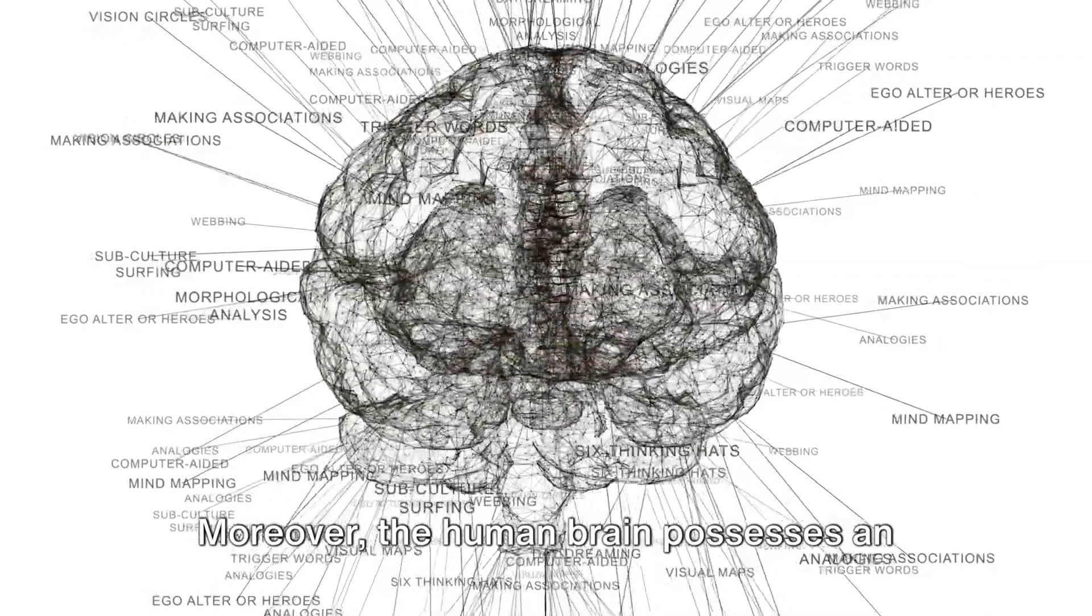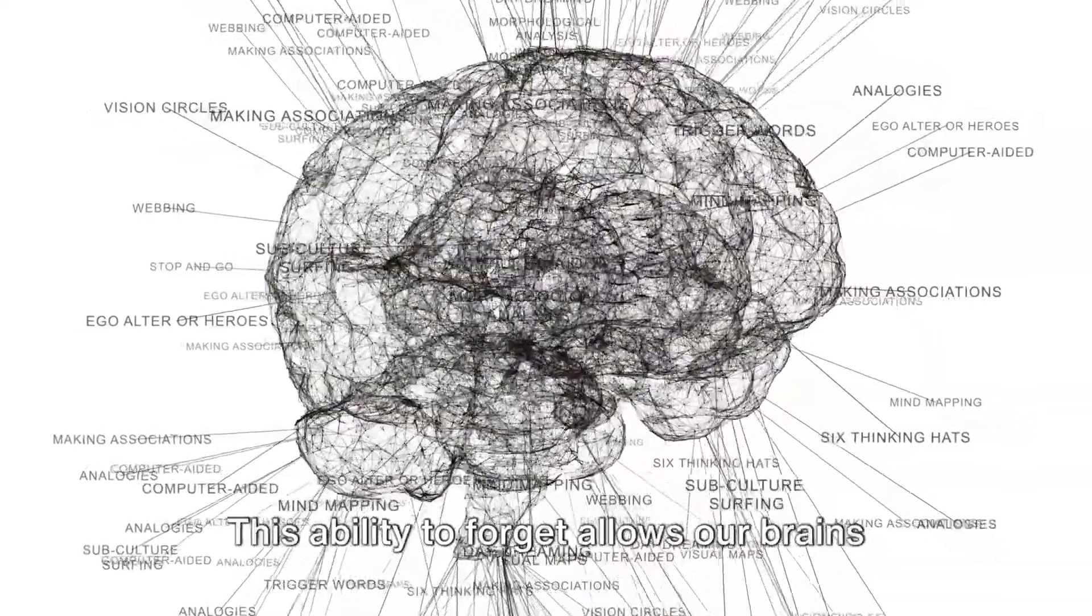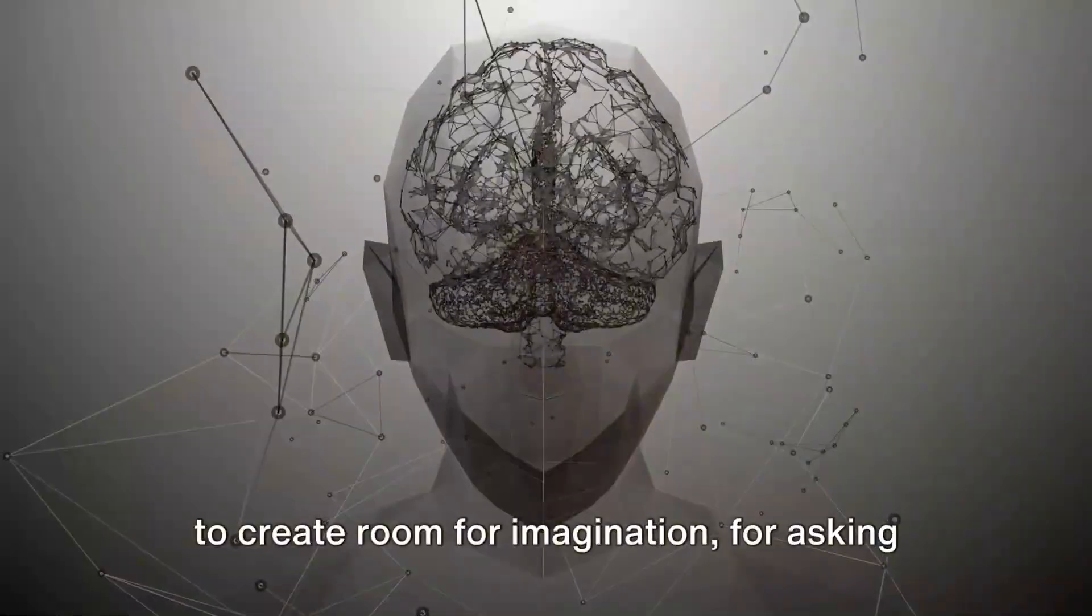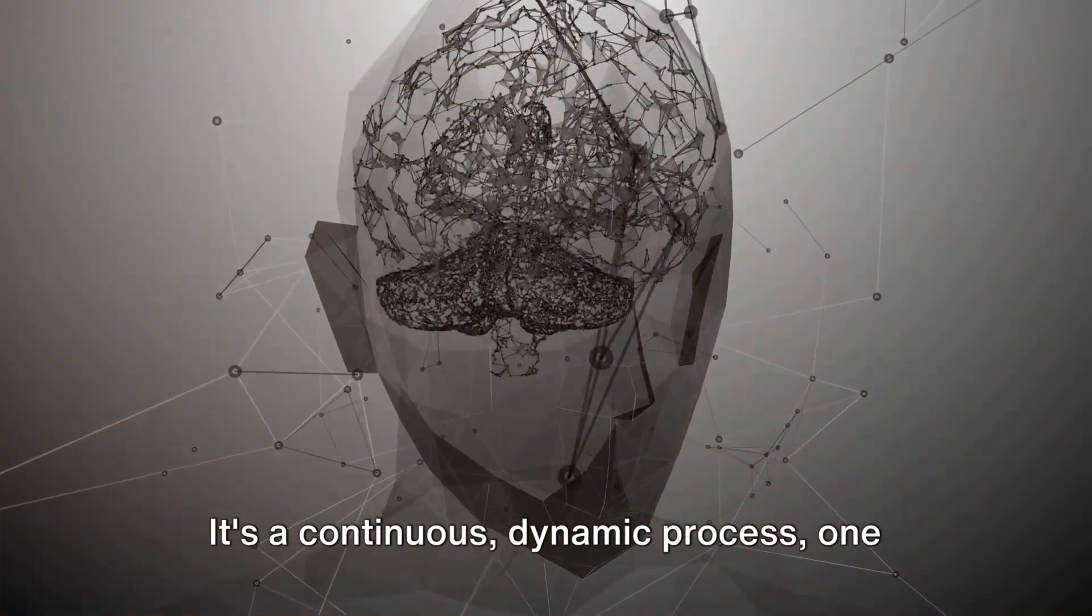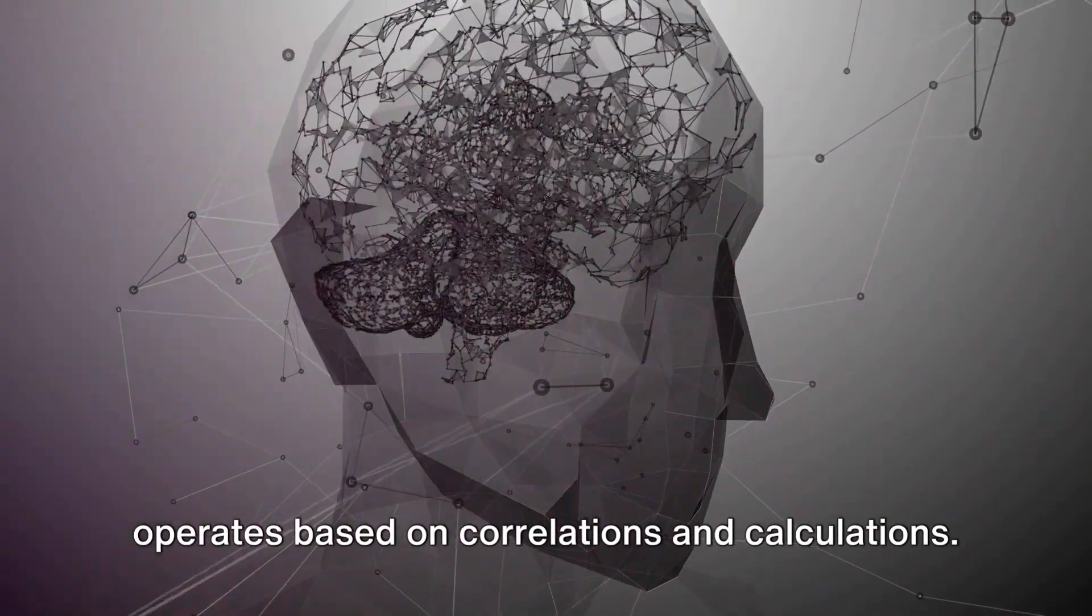Moreover, the human brain possesses an element of unpredictability: the ability to forget and imagine. This ability to forget allows our brains to create room for imagination, for asking questions, and for finding answers. It's a continuous, dynamic process, one that cannot be mimicked by AI that operates based on correlations and calculations.